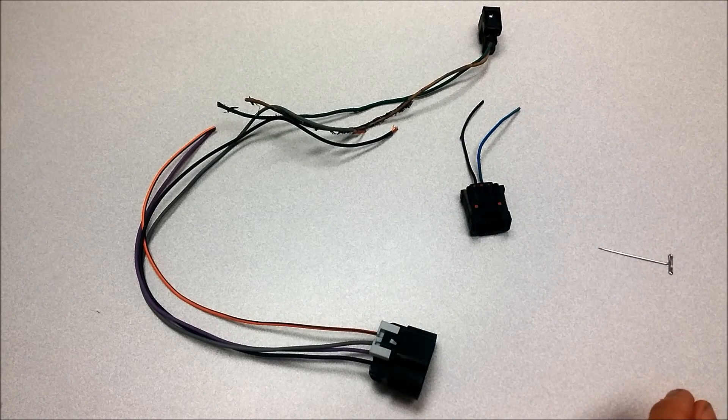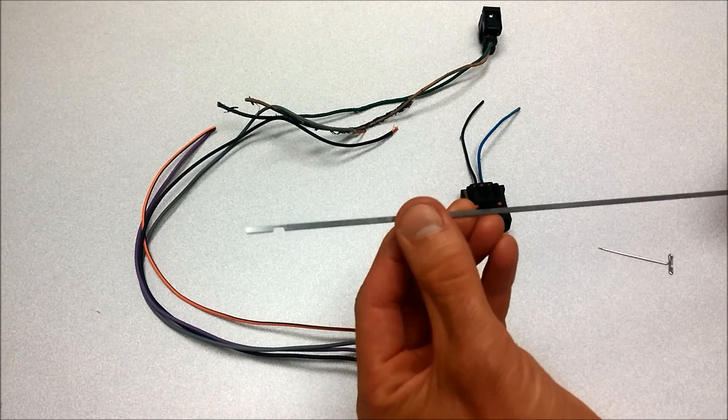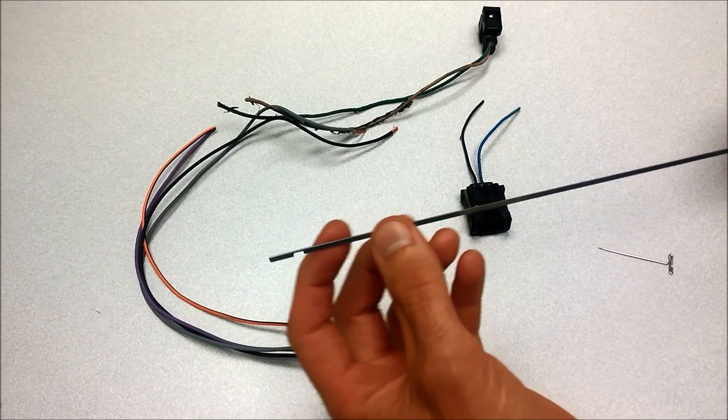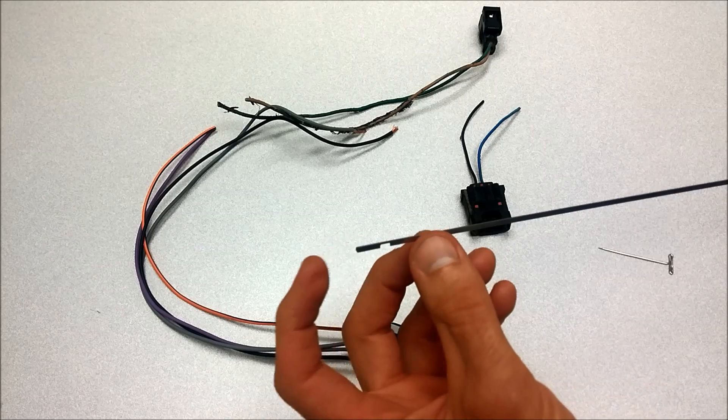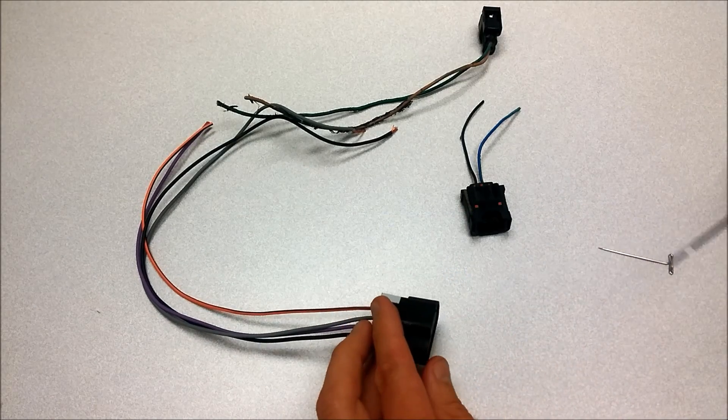Another option, some people will take the stiffener out of a windshield wiper blade. This is one of the metal stiffeners that come in the blade, and when you replace your blades you have these left over, and they'll cut these to make little tools they can use to remove the terminals.